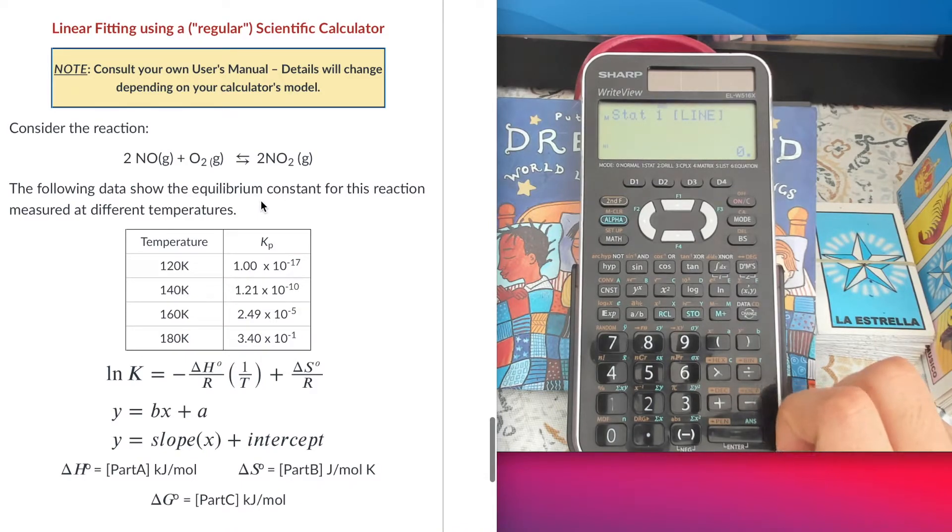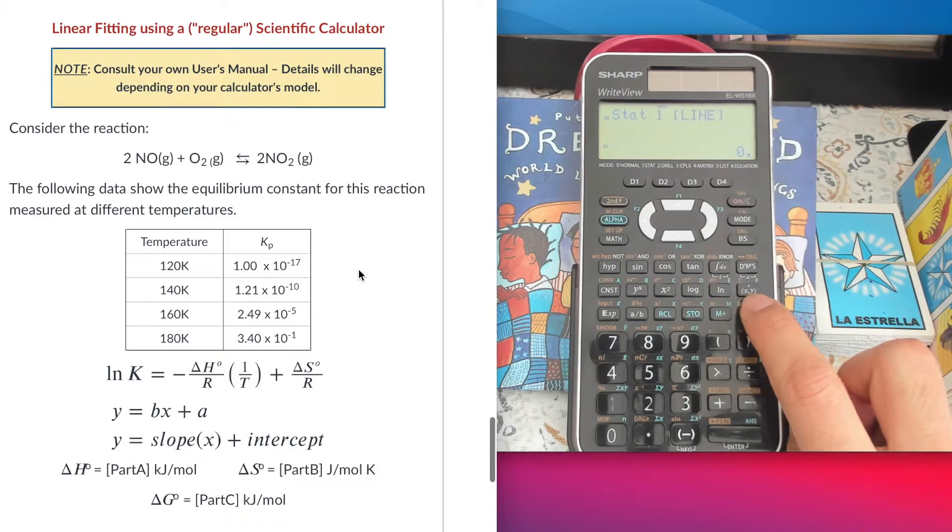I'm going to be entering data in the fashion of x and y parameters, so my calculator has this particular button here that says x comma y. That's how I'm going to enter the point. Once I enter each of the data points, I'm just going to tell the calculator this is my first point by pushing this button data.